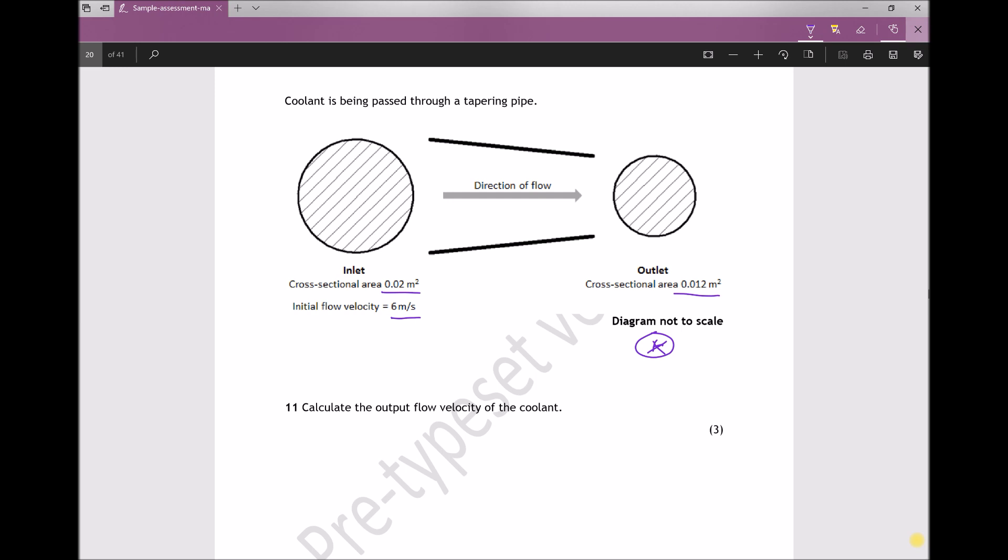Now we only have one equation that we need to apply here, the continuity equation, and the continuity equation states that V1A1 equals V2A2. Now you may also see this expressed as U1A1 and U2A2, where U or V is the velocity and A is always the area.